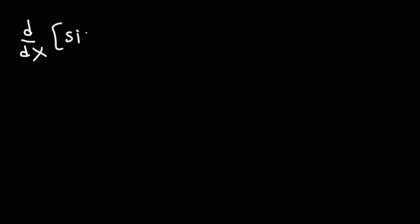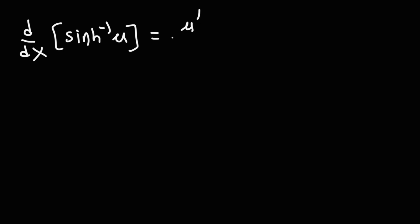The derivative of the inverse hyperbolic sine function of the variable u, where u is a function of x, is equal to u prime over the square root of u squared plus 1.